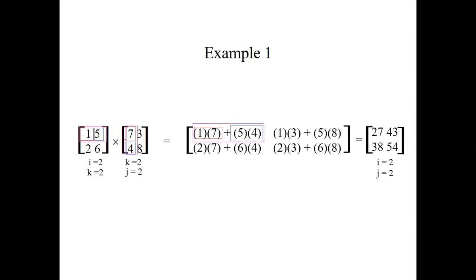Next, we multiply the first row with the second column: 1×3 + 5×8, which gives the second entry in the first row of the product matrix. 1×3 + 5×8 equals 43. We have no more columns in the second matrix, so we move to the second row.